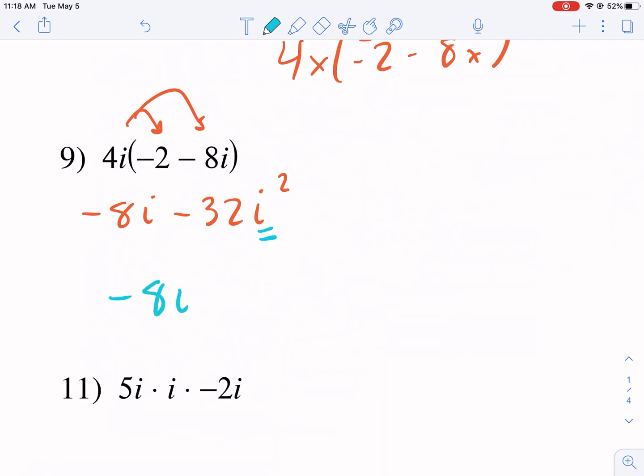So we're going to have -8i minus 32, and then this becomes, as we just showed, -1. So -8i plus 32.